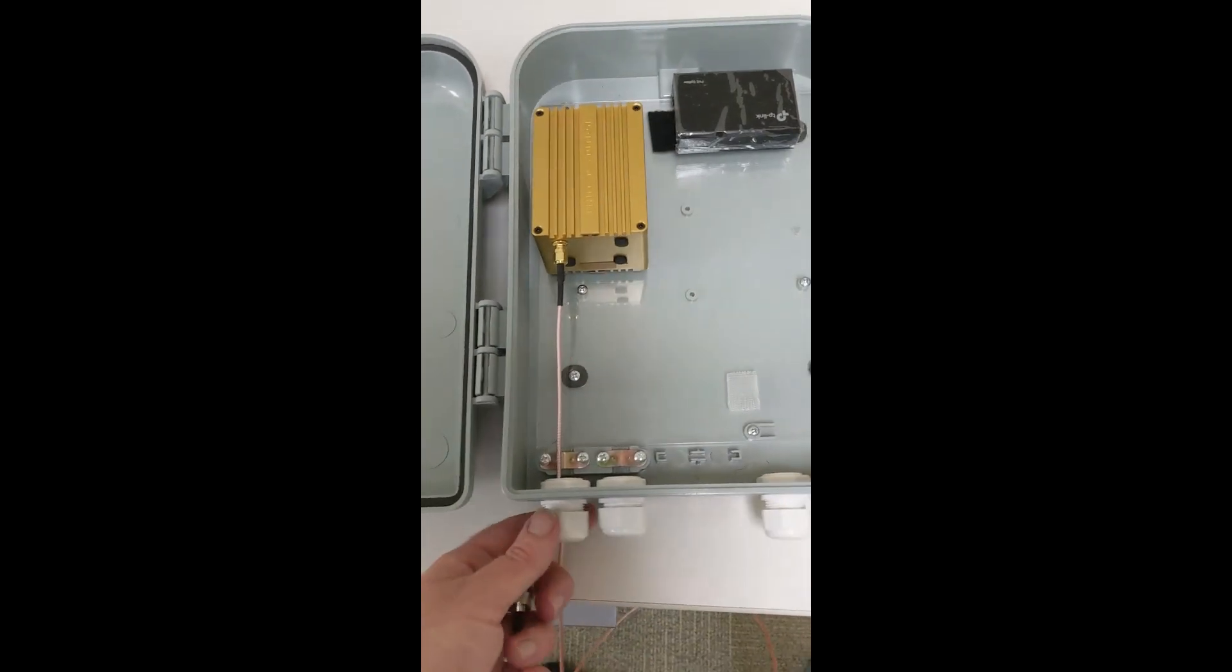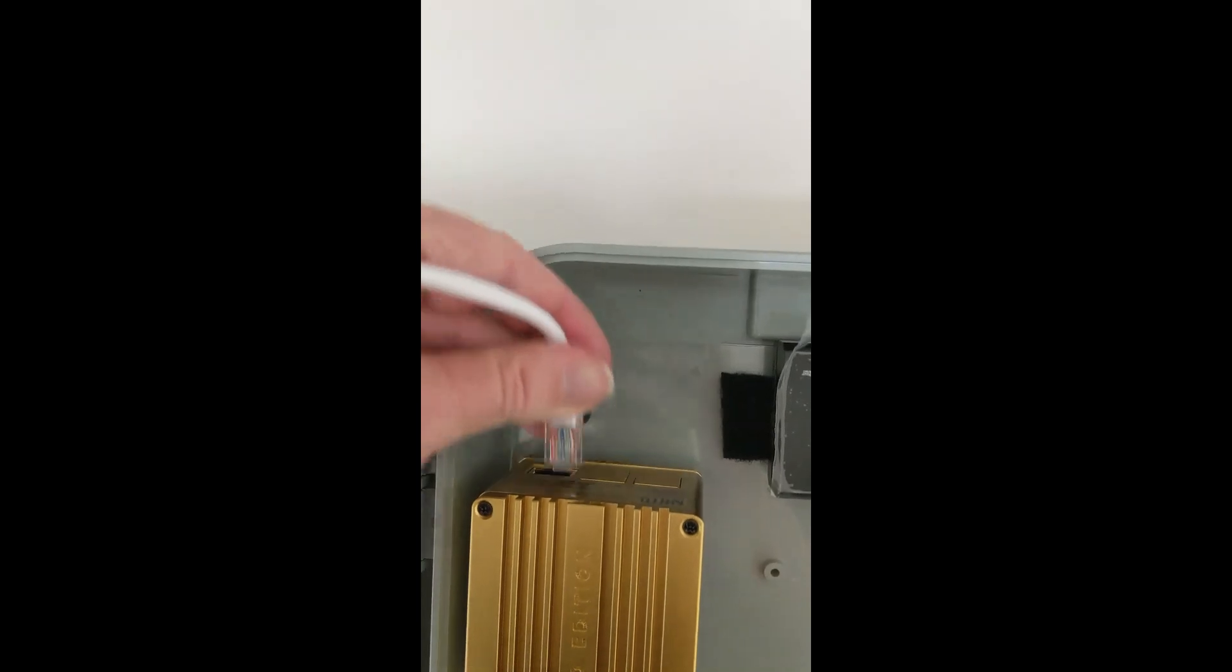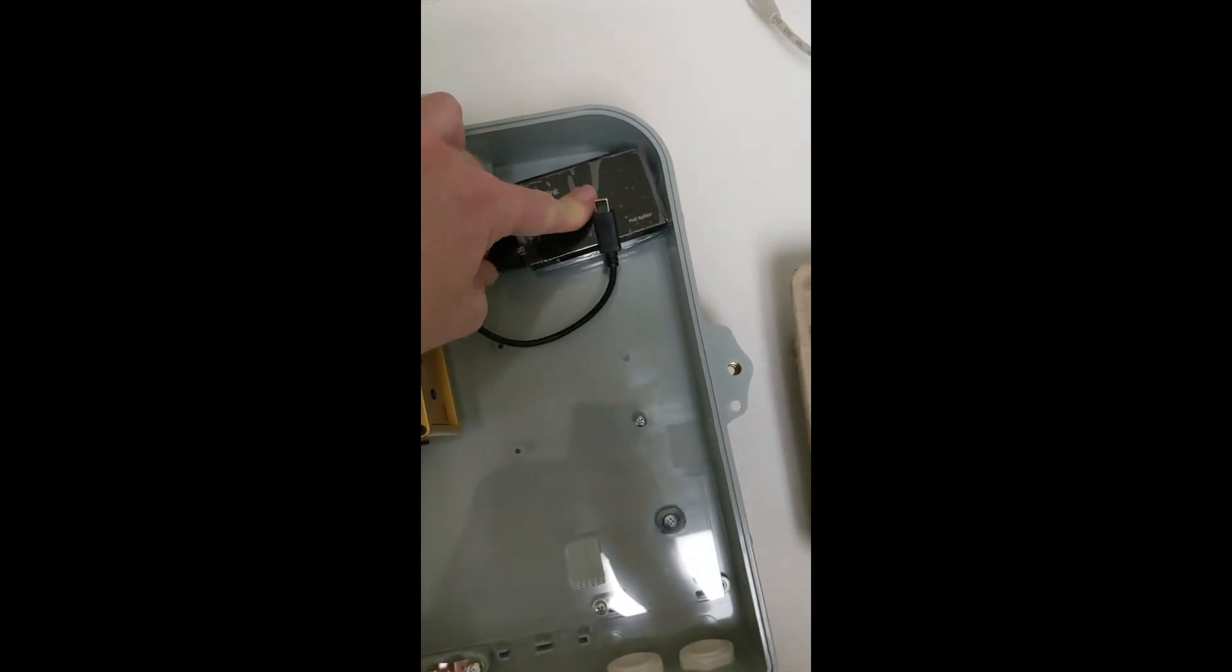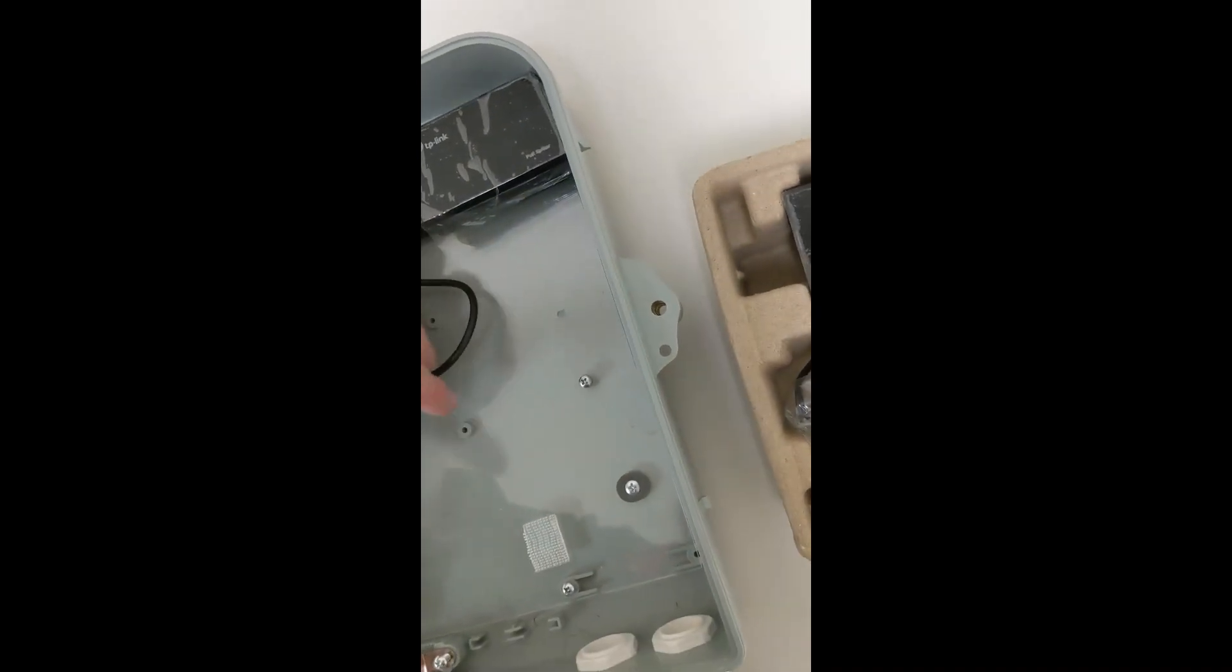Once you get your antenna cable in, just cinch down the cable gland and then I'm going to install my Ethernet cable and the power cable. Your kit will come with the right cable for your hotspot, either USB-C or a regular barrel connector.